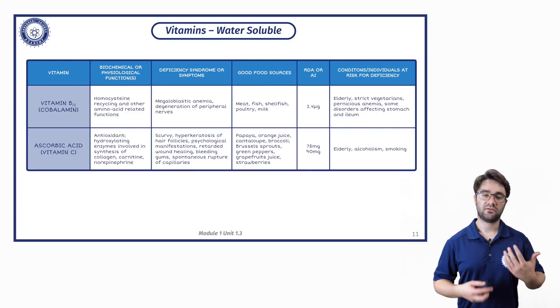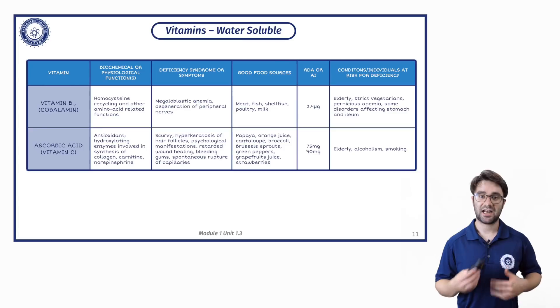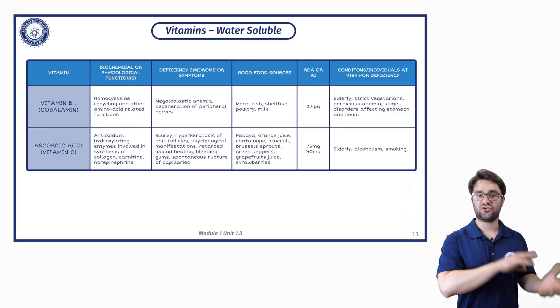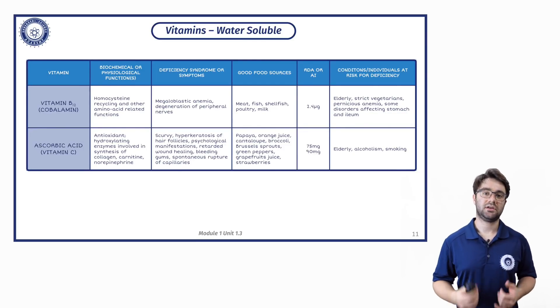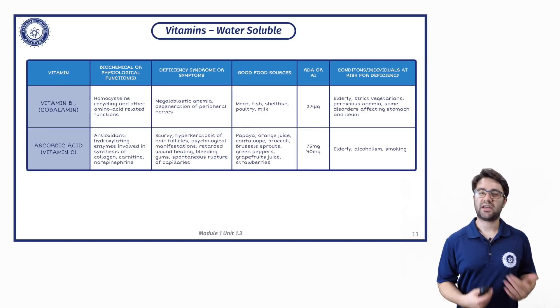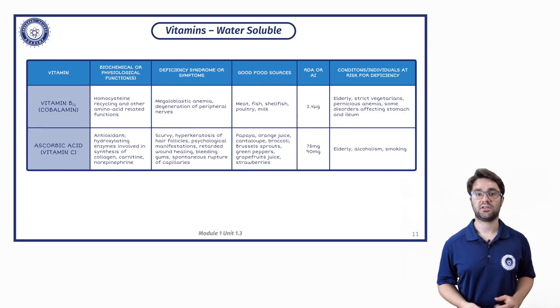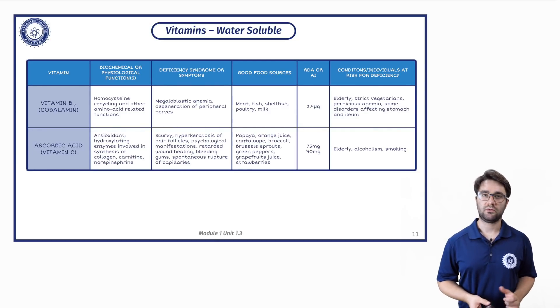Norepinephrine, again, is one of the catecholamines, which is along with adrenaline or epinephrine, one of the chemicals that is released during your kind of fight or flight response. It's involved in a lot of energy production and rapid energy production at that as well. And again, most of the sources of vitamin C, you're looking at lots of fruit and veg.